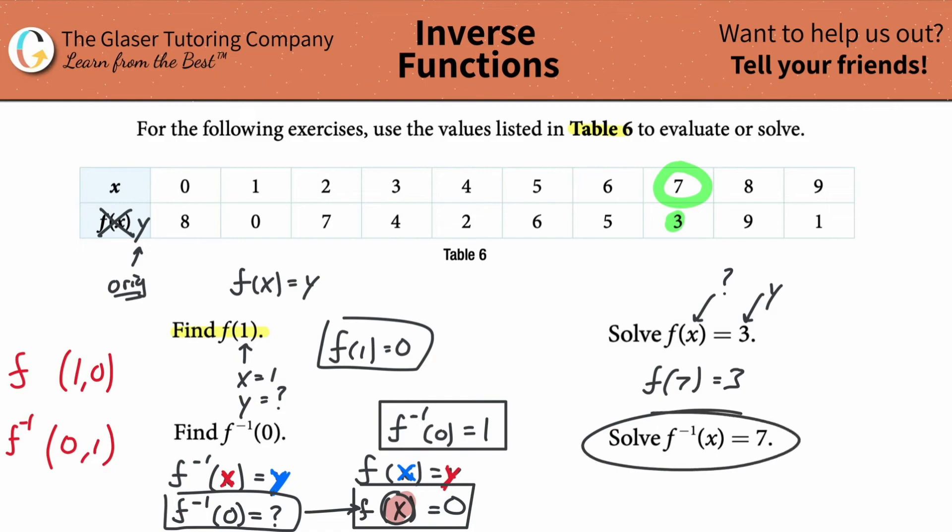And notice what they're doing down here, right? They're giving you the inverse and notice how this is the seven, right? So guess what? This original seven becomes the Y value. And then the original Y value becomes the X value. So I already know the answer, right?